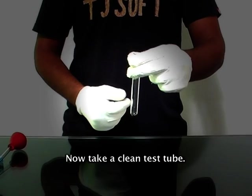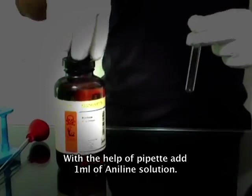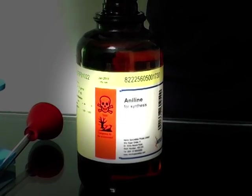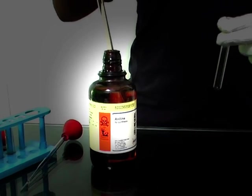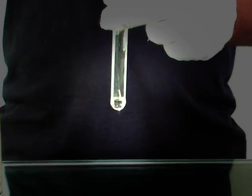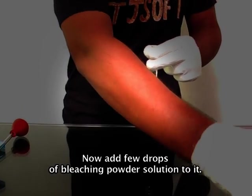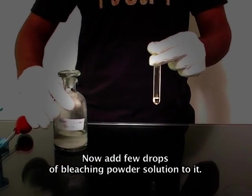Take a clean test tube. Using a pipette, add 1 ml of aniline solution. Now add a few drops of bleaching powder solution to it.